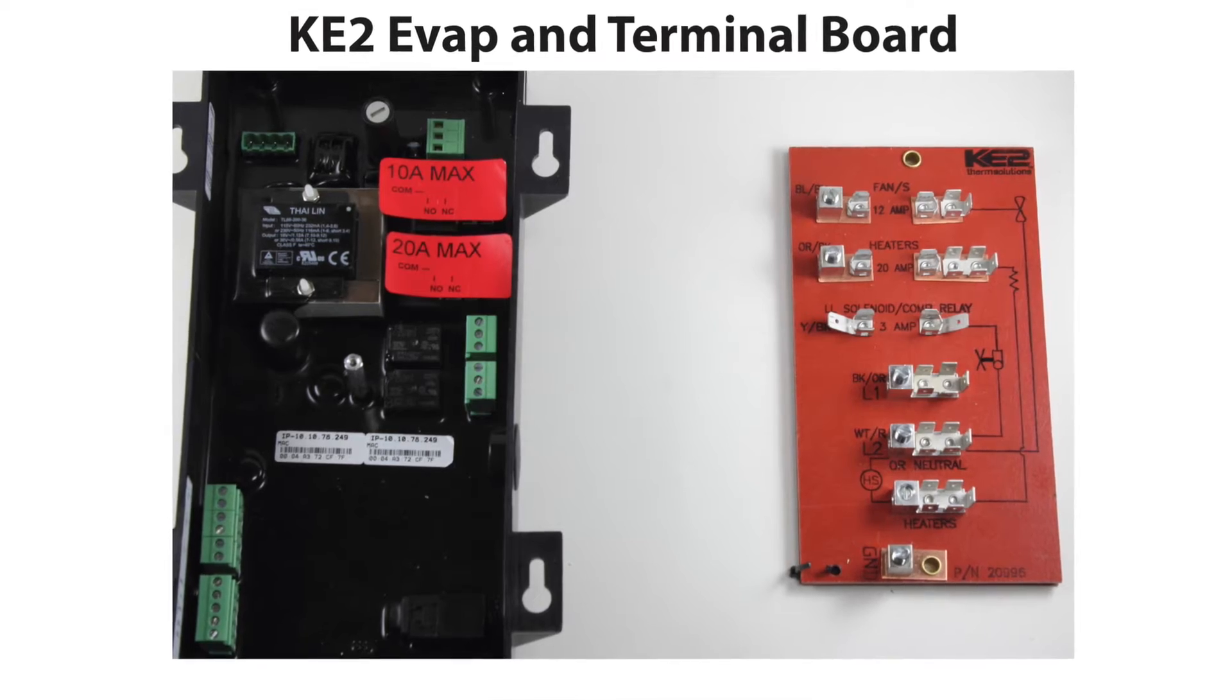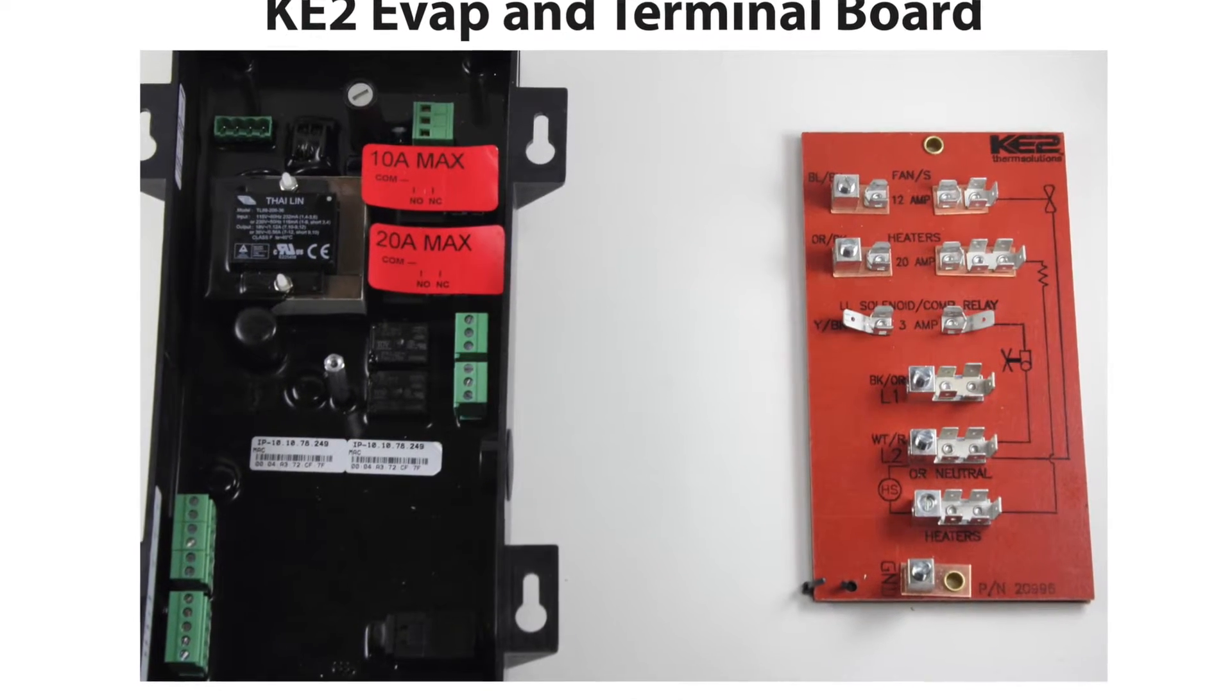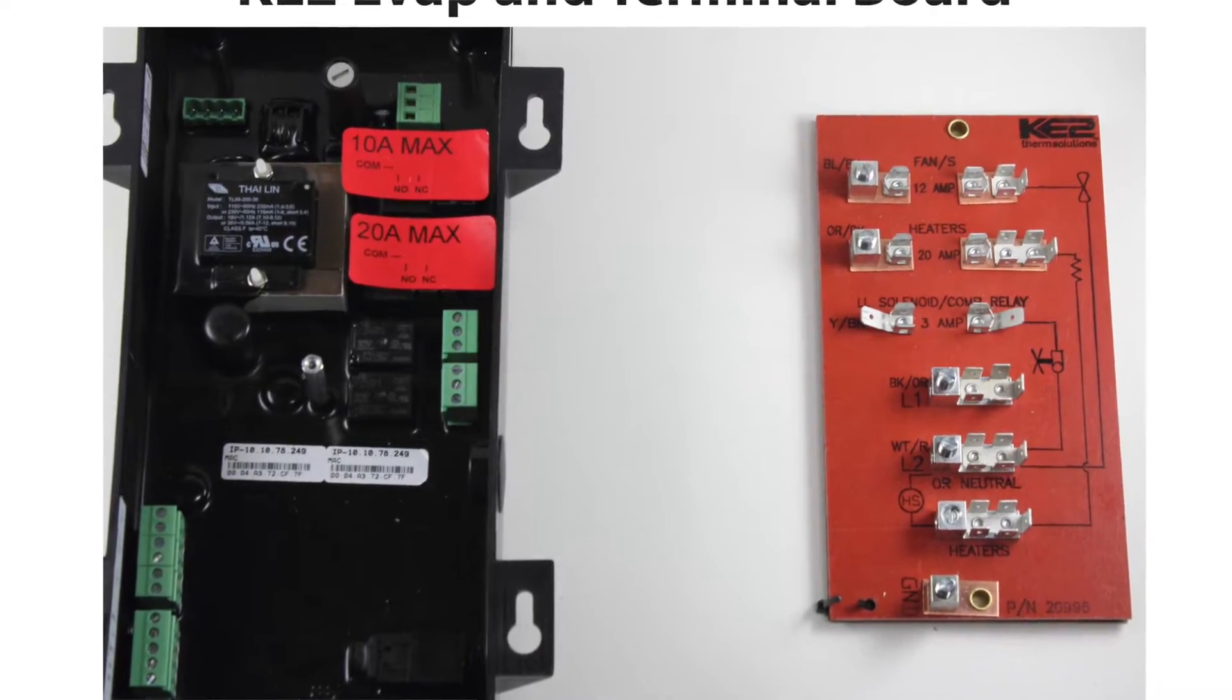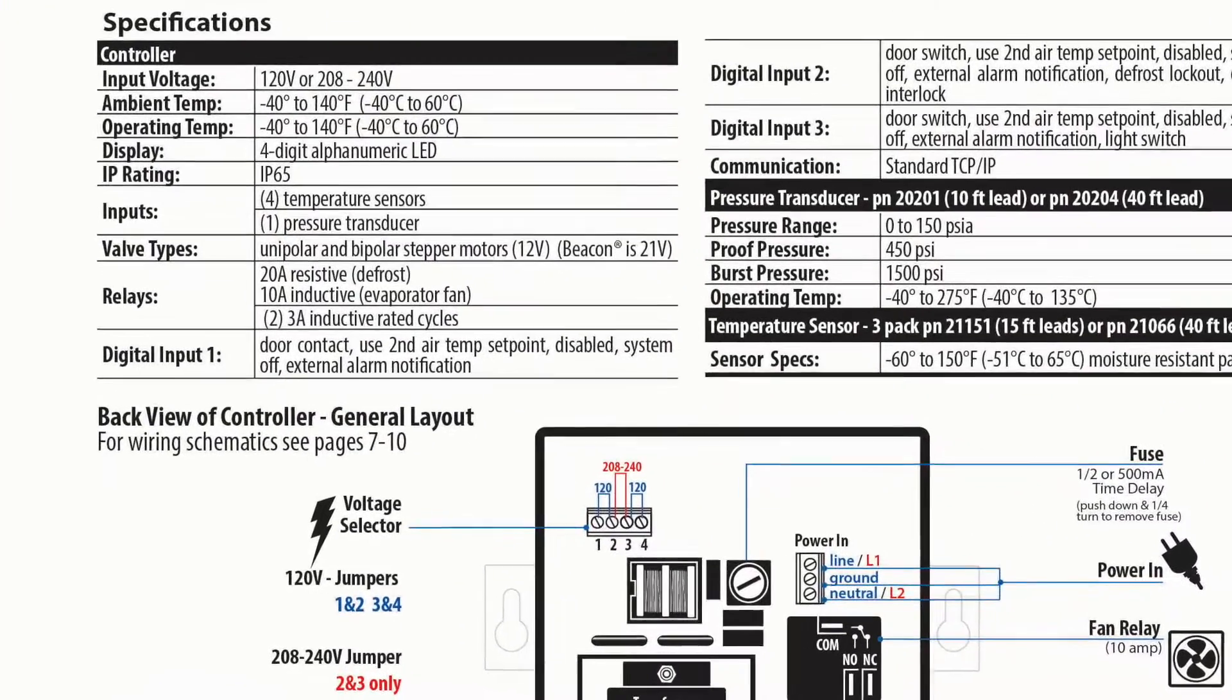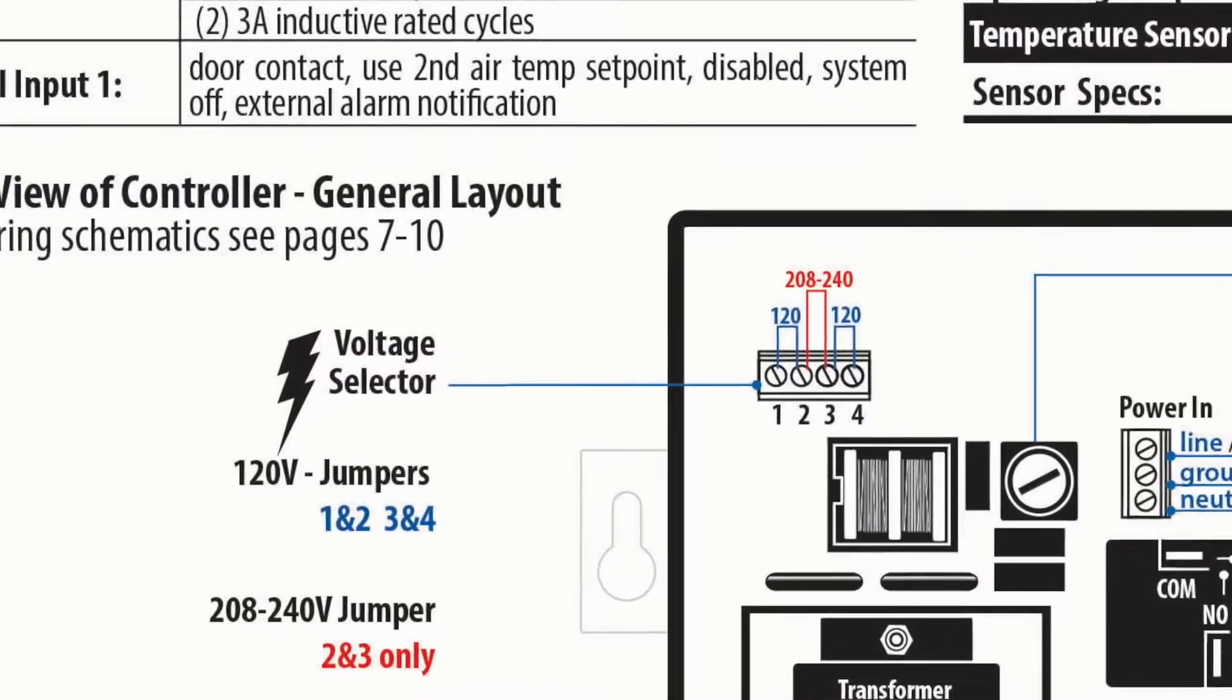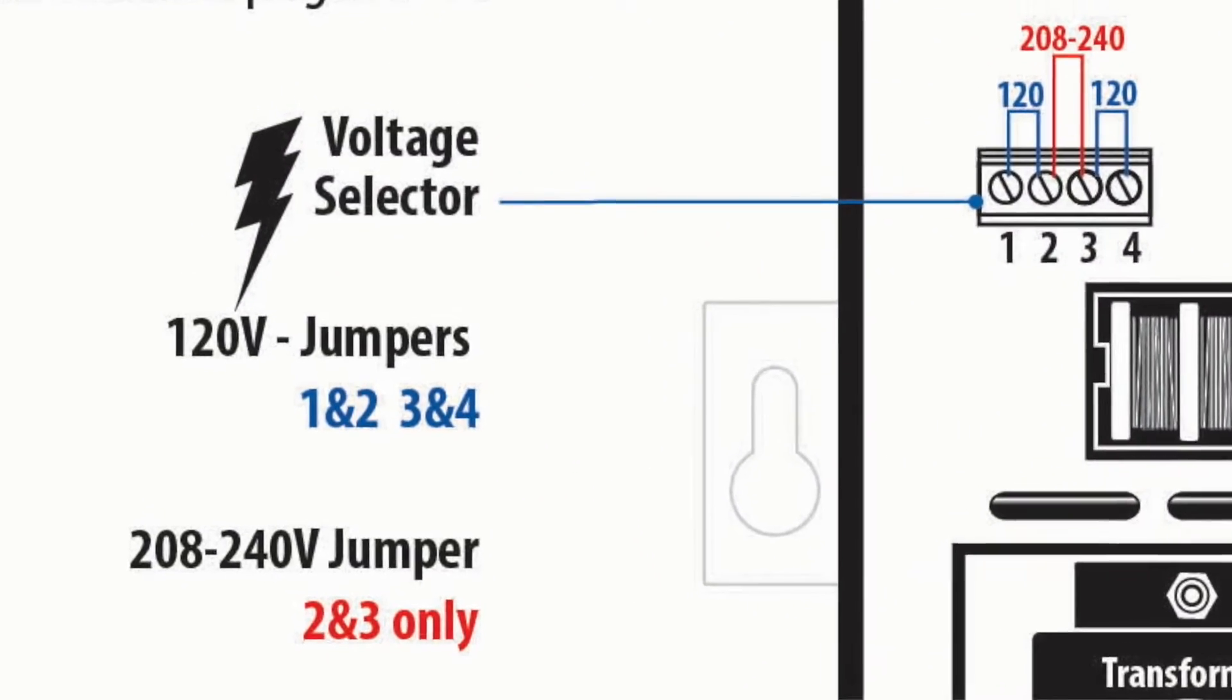Here we have a side-by-side view of the controller and the terminal board to be used at the evaporator. Depending on the power at the evaporator, your controller can be used for 120 volts or 208, 230 volts to run your refrigeration system.